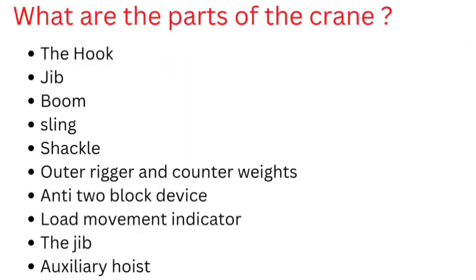What are the parts of the crane? The hook, jib, boom, sling, shackle, outrigger and counterweights, anti-two block device, load movement indicator, and auxiliary hoist.